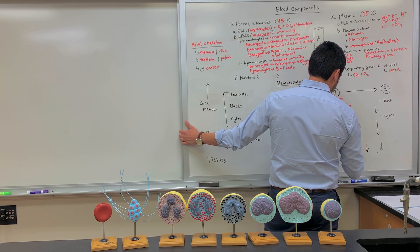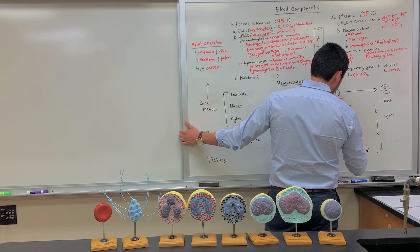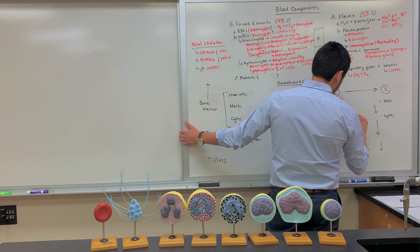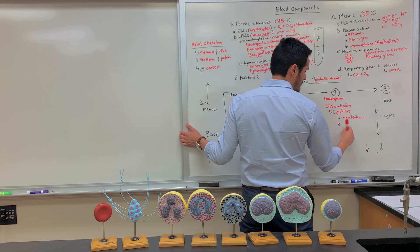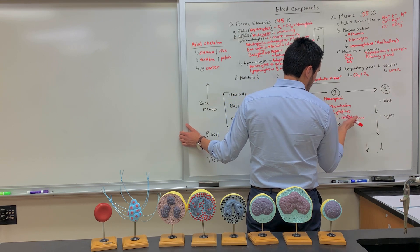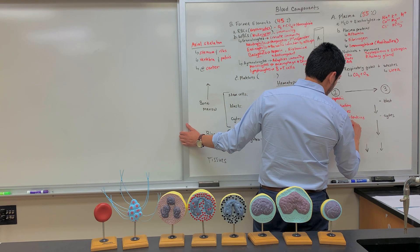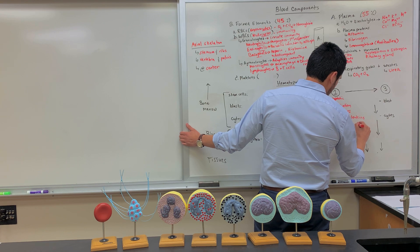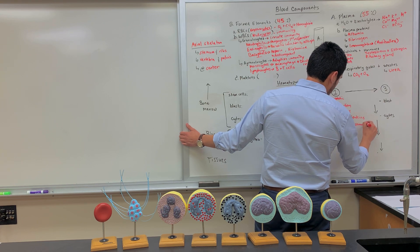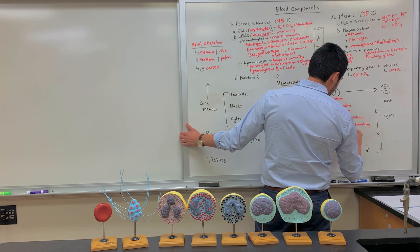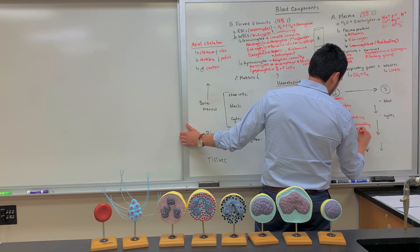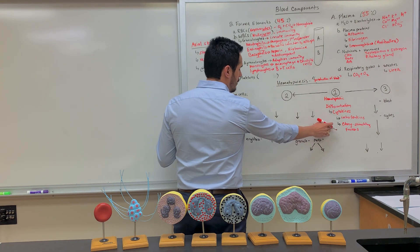Some of the specific cytokines include interleukins, so inter meaning between, and then the white blood cells. So you need interleukins, and then also colony stimulating factors. Okay, so let's look here at the very end, and then work our way back up.